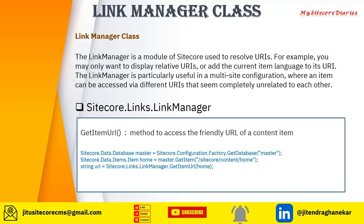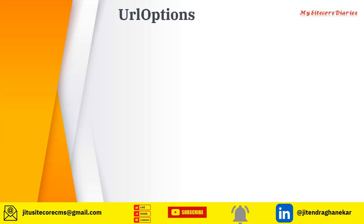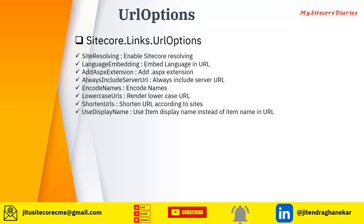Now the question is: we have seen that you can have multiple ways of generating a URL, but this code alone doesn't cover that. To handle different URL patterns, there are other classes you can pass into GetItemURL. The Sitecore.Links namespace is the proper namespace; LinkManager is the class. One of those option classes is URL Options — Sitecore.Links.UrlOptions.